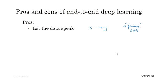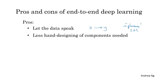The second benefit of end-to-end deep learning is that there's less hand designing of components needed. And so this could also simplify your design workflow that you just don't need to spend a lot of time hand designing features, hand designing these intermediate representations.